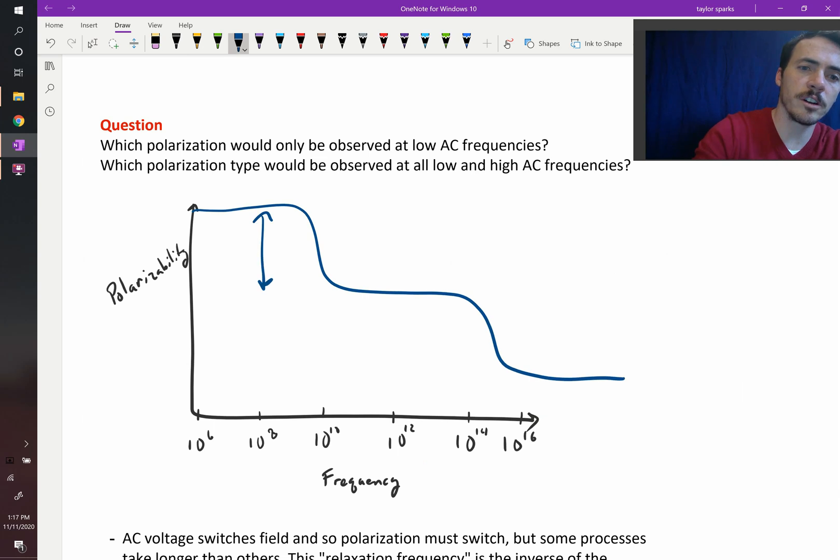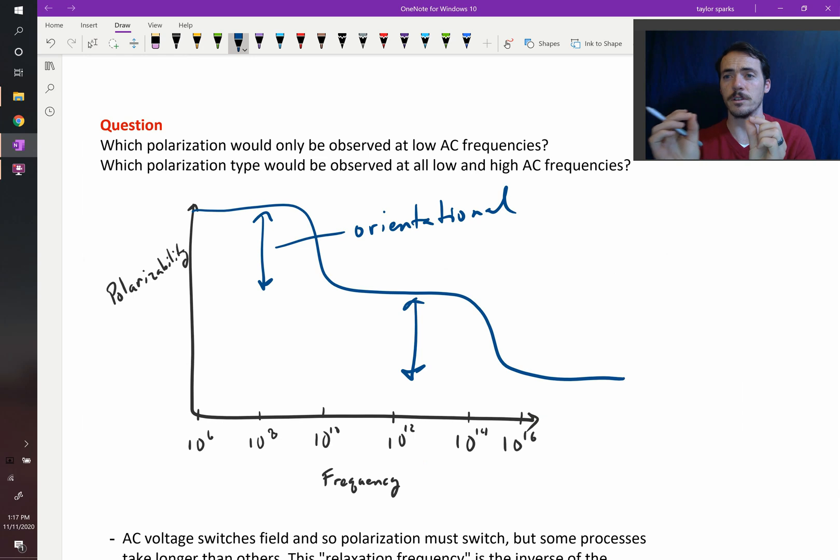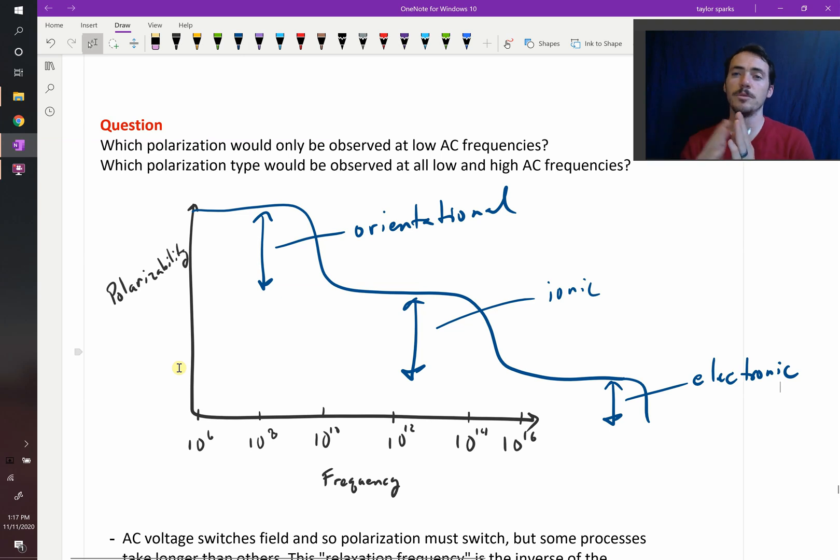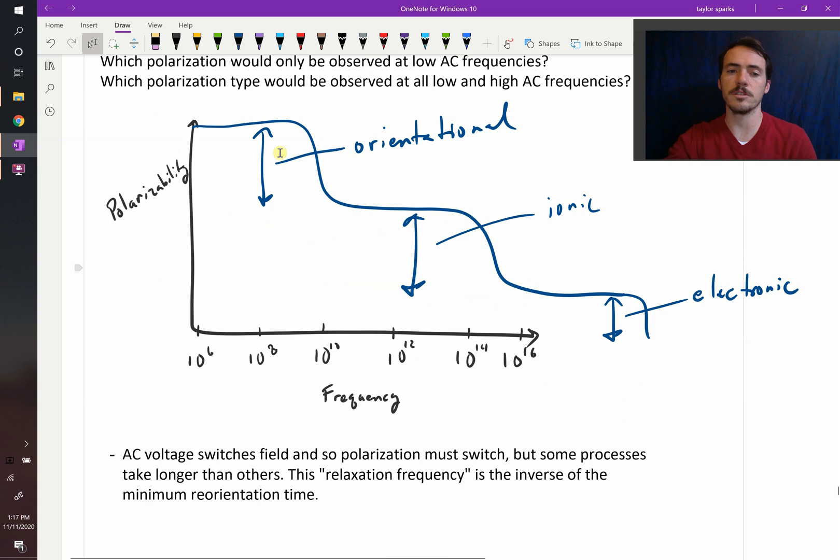So over here, this contribution, the first one that you lose as you start to speed it up, that's going to be orientational. And then this contribution that you lose as you speed it up, eventually you're going to lose that contribution. That's going to be from ions actually physically moving. So that's going to be ionic. And then if you go really fast, this down here is going to be electronic, where technically electrons can move around really, really quickly. And so they're going to be the easiest to switch over all frequency ranges. But as you move to really, really faster and faster frequencies, you're going to lose your ionic and your orientational. So you can do this sort of switching to observe your different mechanisms and you can actually calculate how much is coming from each.